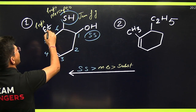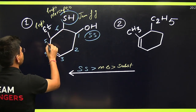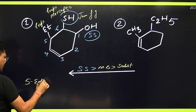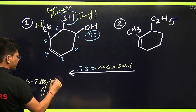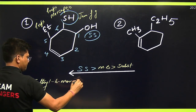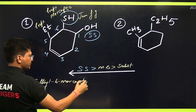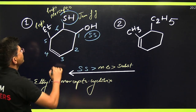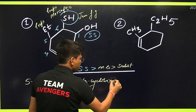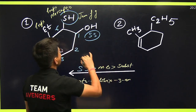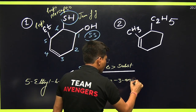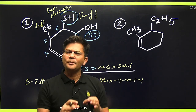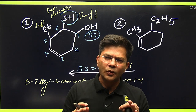So the name of this compound: ethyl comes first, at position five — so I write 5-ethyl. Then 6-mercapto. Cyclohex — and since there is a double bond at position three — cyclohex-3-en-1-... and that is the name for this compound. We have done this compound in the best way.